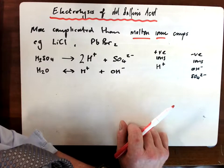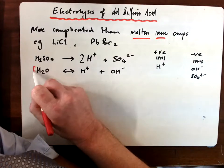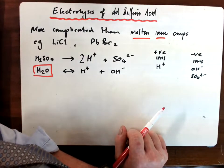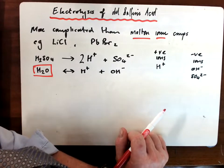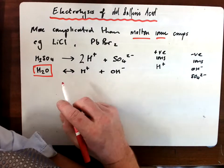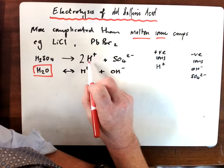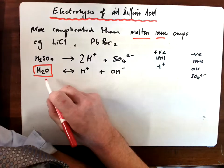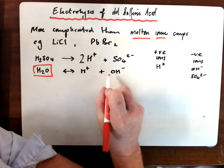The complication now with electrolysis of dilute or aqueous solutions is that we also have water coming into the equation. That complicates things a little bit, and we need to know how to deal with that. If we look first of all at what we've got here whenever we carry out the electrolysis of dilute sulfuric acid, the dilute sulfuric acid itself will ionize into hydrogen ions and sulfate ions, and the water, when I pass electricity through it, will also split up into hydrogen ions and hydroxide ions.